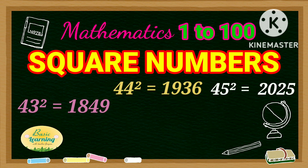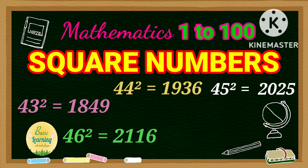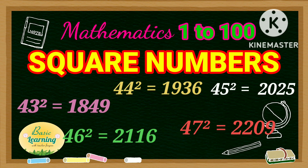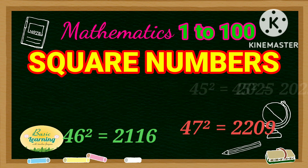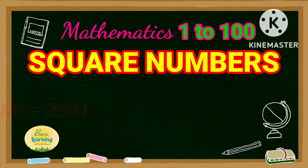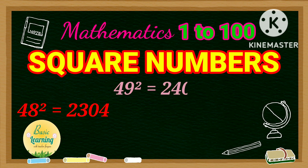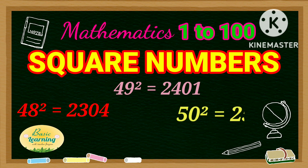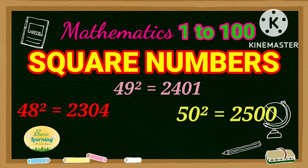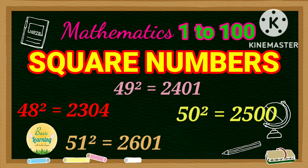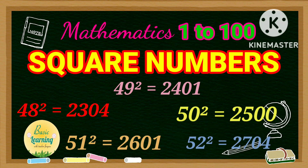Square of 45 is 2,025. Square of 46 is 2,116. Square of 47 is 2,209. Square of 48 is 2,304. Square of 49 is 2,401. Square of 50 is 2,500. Square of 51 is 2,601. Square of 52 is 2,704.